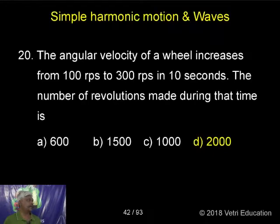The angular velocity of a wheel increases from 100 to 300 in 10 seconds. The number of revolutions made during that time is.